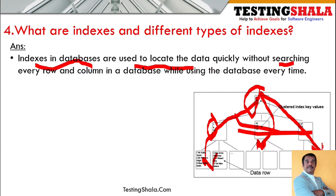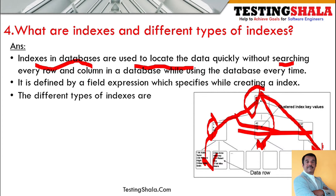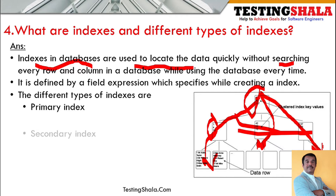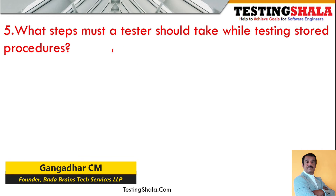Without checking each and every row or column, using indexes it is very easy to search things much more quickly. The various types of indexes available are: primary indexes, secondary indexes, reverse indexes, hash index, dense index, and sparse indexes. These are some of the important types of indexes available in databases.